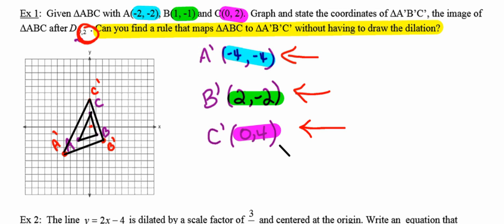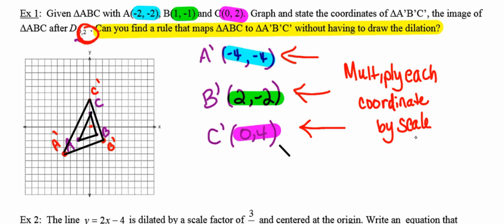is simply multiply each coordinate by the scale factor. And it's important to remember that this only works with the center of dilation at the origin.